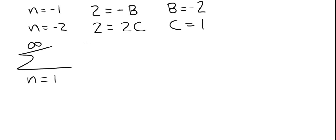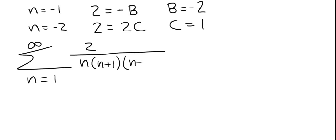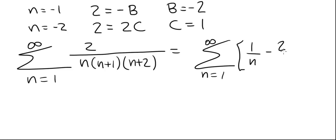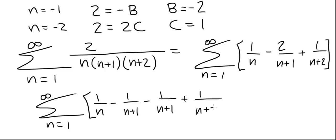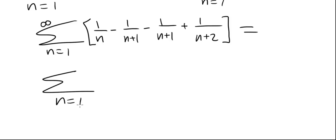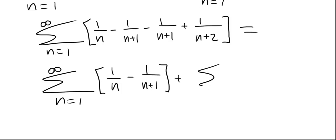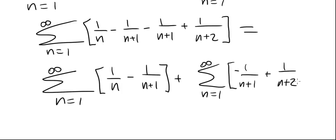Now we can express our series as the summation from 1 to infinity of 1 over n minus 2 divided by n plus 1 plus 1 over n plus 2. We rewrite this as the summation from 1 to infinity of 1 over n minus 1 over n plus 1, minus 1 over n plus 1 plus 1 over n plus 2. Then we split this into a pair of infinite series for easier handling.